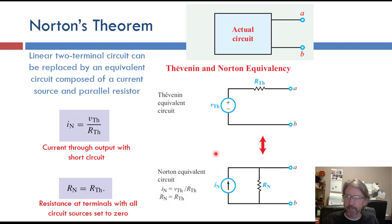Norton current is Thevenin voltage divided by Thevenin resistance, and the resistors are the same value in both equivalent circuits. So if you find the Thevenin, you can easily convert to the Norton. If you have the Norton, I, and R, it's the same R, and you can calculate the Thevenin voltage using this equation too.